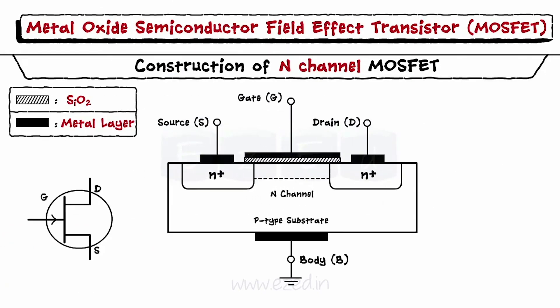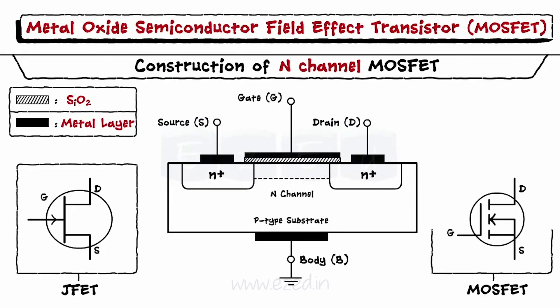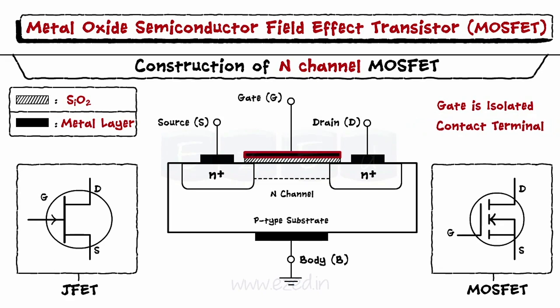The symbols of JFET and MOSFET are almost the same, except that there is a dotted line between the gate and the other two terminals in MOSFET. This is because in the MOSFET, the gate terminal is kept isolated from the drain and the source with the help of an oxide layer, and metal is used to make the contact terminal. Thus, this device is named as the Metal Oxide Semiconductor Field Effect Transistor.